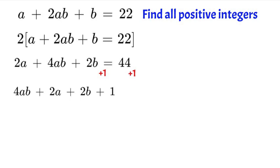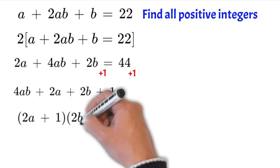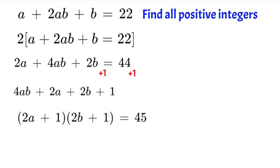Now we can factor this. Now that we have that positive 1 we can factor it. So if we factor it we'll have 2a plus 1 times 2b plus 1 equal to that 45.